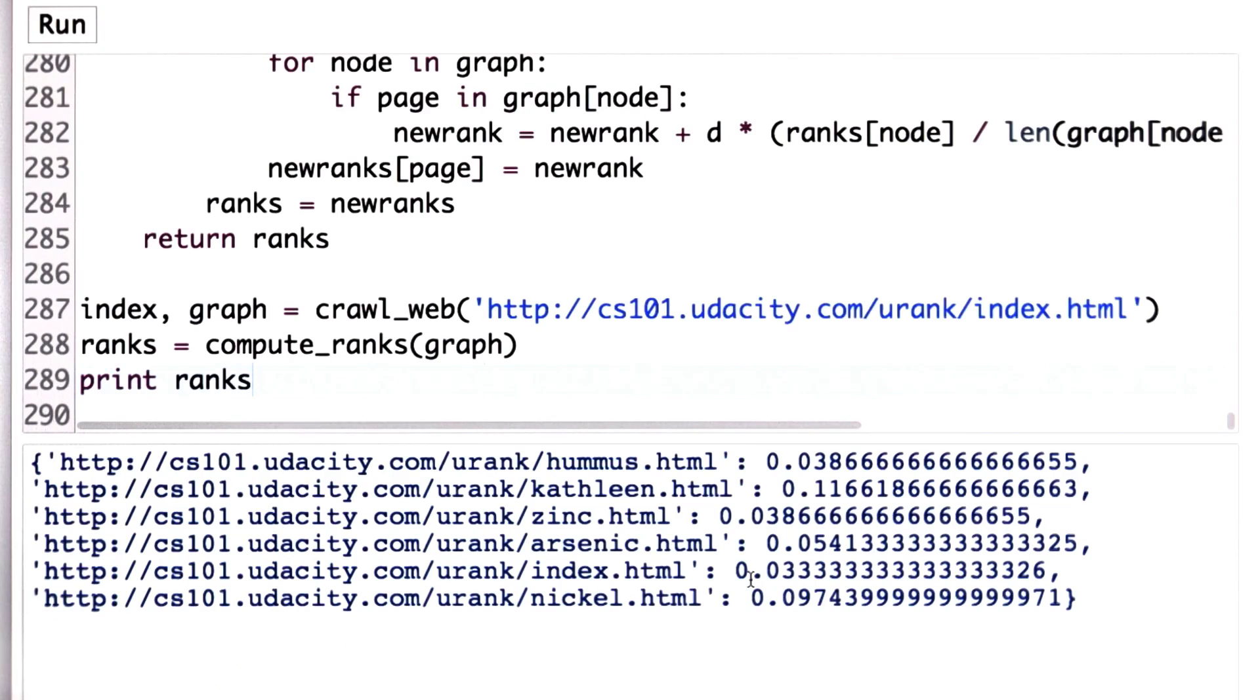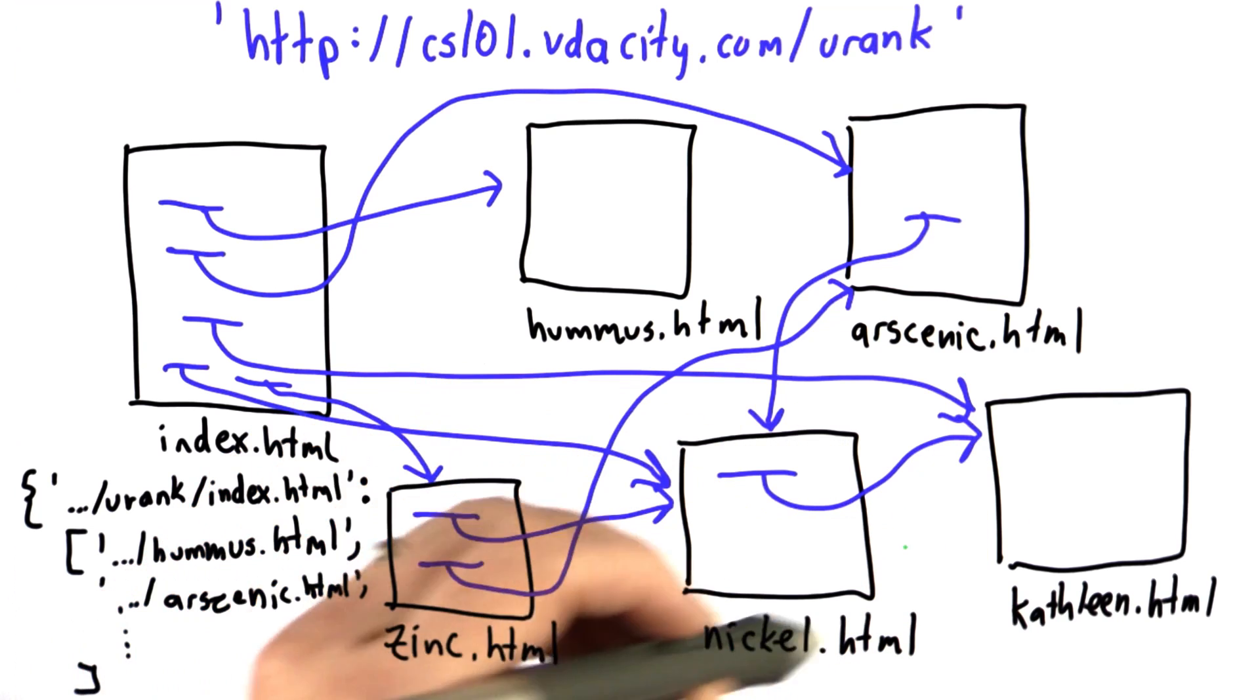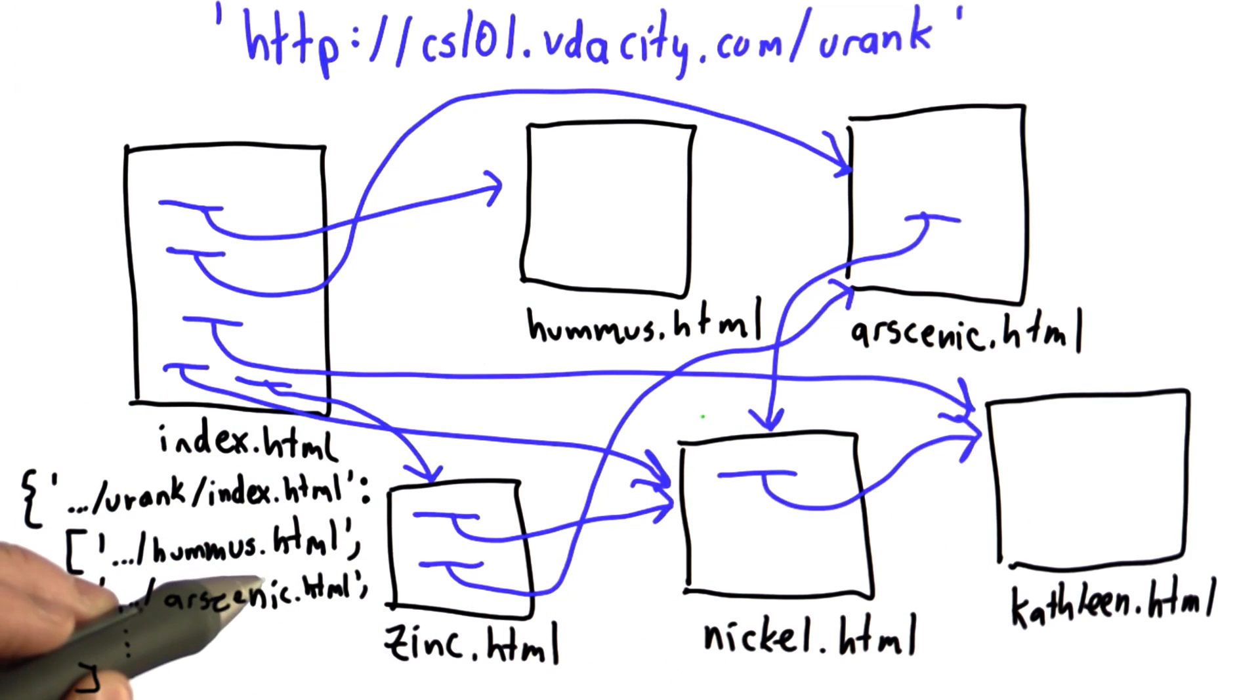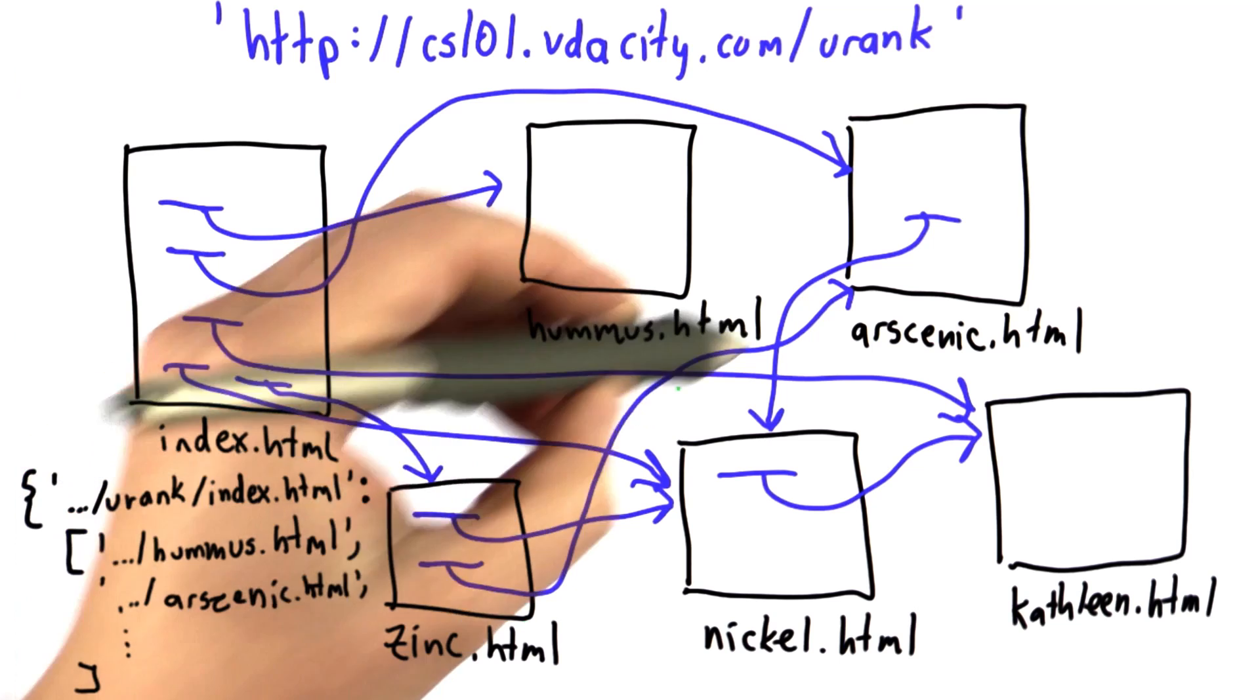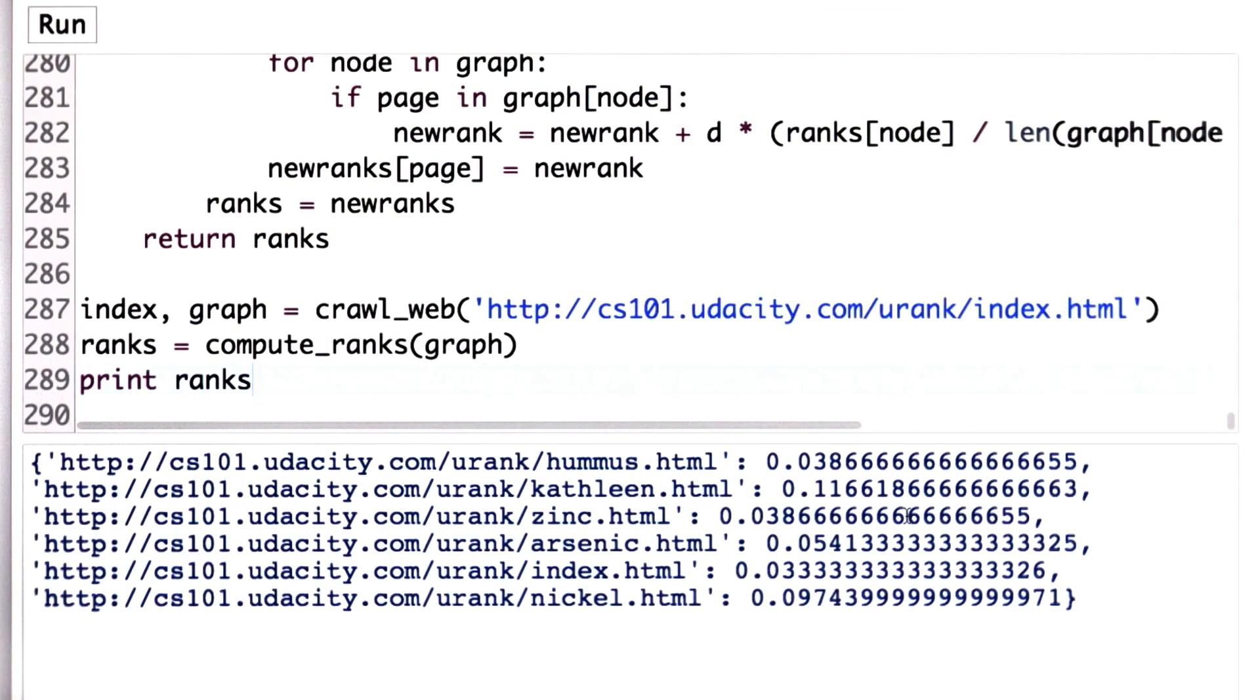So going back to our example site, we have the page Kathleen that has two links going into it. We have the page nickel that has three links going into it. If we just did simple link counting, well, then nickel should be more popular than Kathleen. If we look at the page ranks, well, the page rank for nickel is 0.97. The page rank for Kathleen is 0.11. So the page rank is actually higher for the page that only has two incoming links.